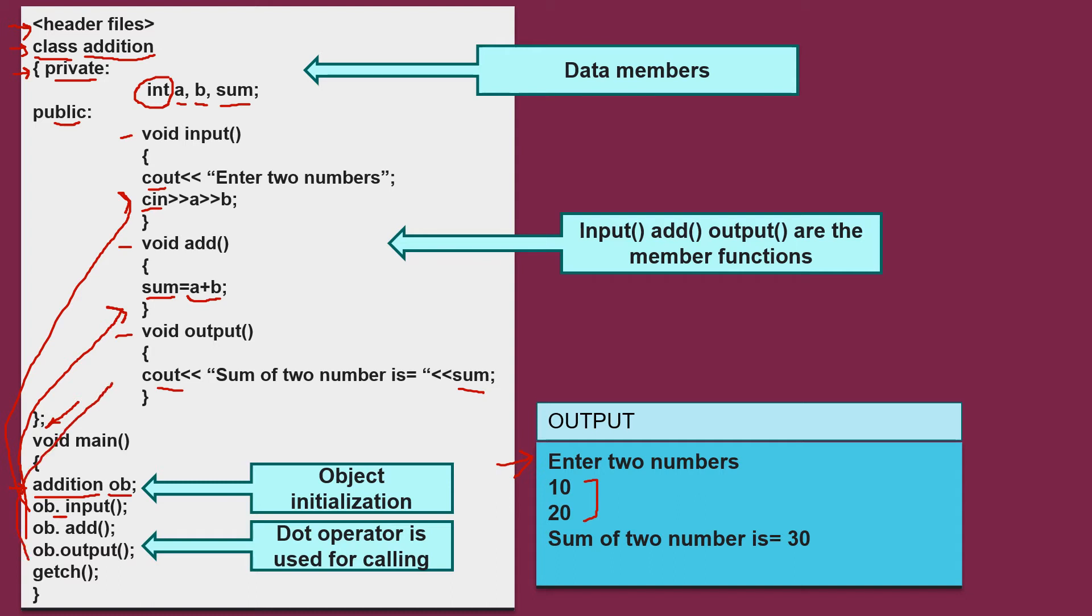Finally, ob dot output is called where it is printing your output as sum of two number is 30. So, this is how we implement our classes.